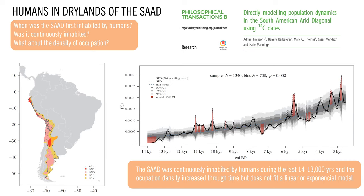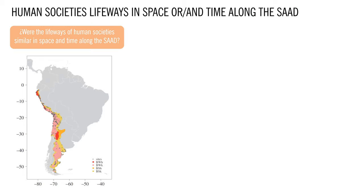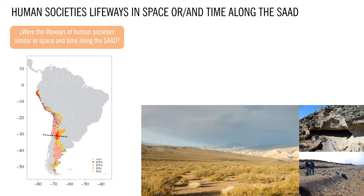As a first step, they plotted the summed probability distribution as a proxy representation of the population dynamics, which basically answered the three questions. The South American Arid Diagonal was continually inhabited by humans during the last 14–13,000 years, and the occupation density increases through time, but does not fit a linear or exponential model. During the first settlement stages, human economies relied mostly on hunting and gathering, and that lifeway continued up to recent times southward of 32 degrees south.